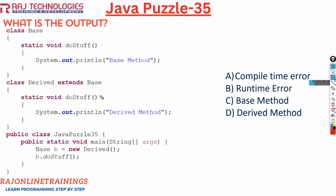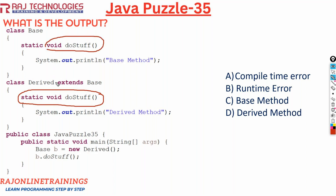In most cases we think that this doStuff method is an overridden method. So what is the concept of method overriding? The methods present in the base class — if you are writing the same method with the same signature (same arguments — here no arguments, here also no arguments) in your derived class, then this concept is called overriding.